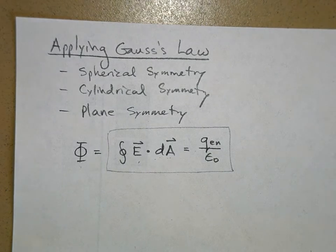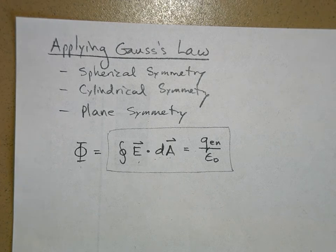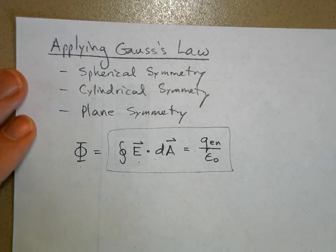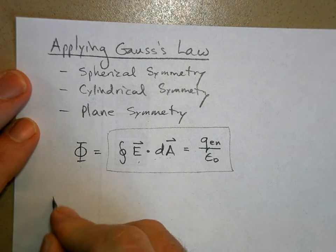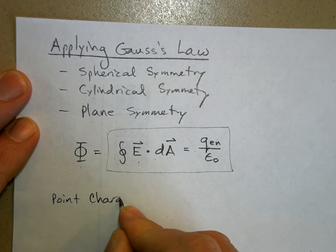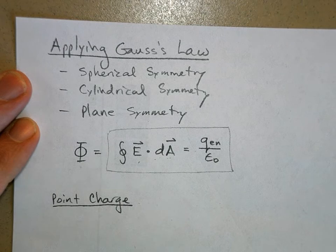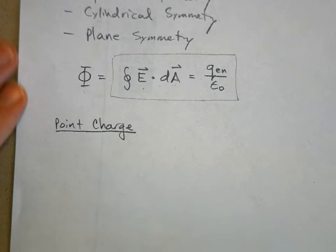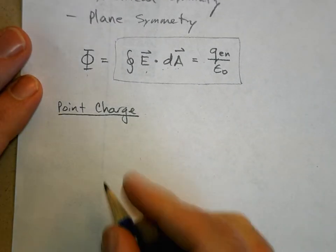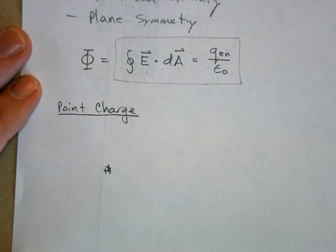We're going to go through spherical symmetry, and the first case is a point charge. If you have a point charge — let's put a little positive charge here with charge q — electric field lines spread out in three-dimensional space.